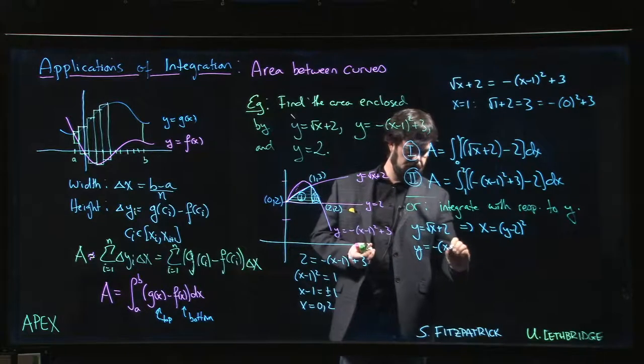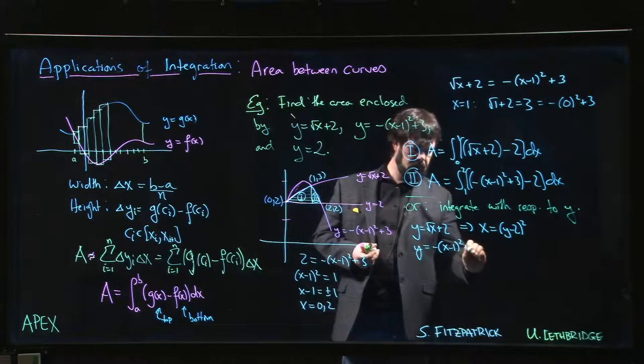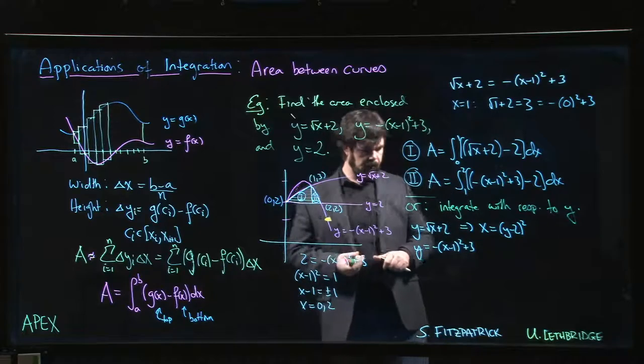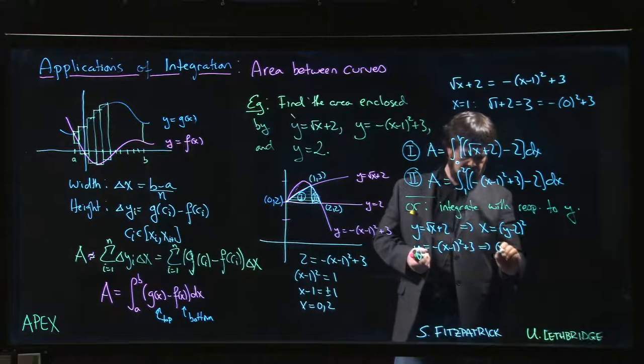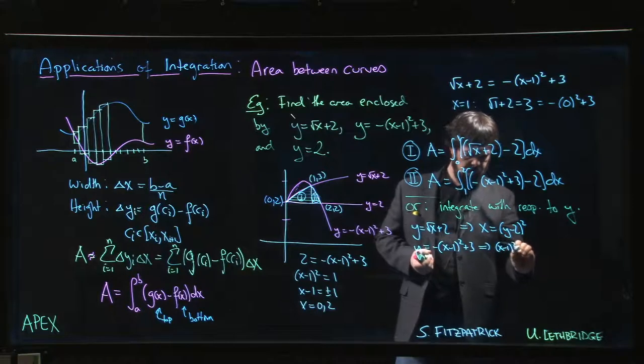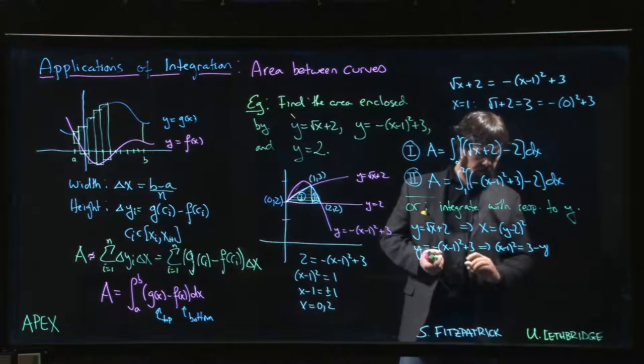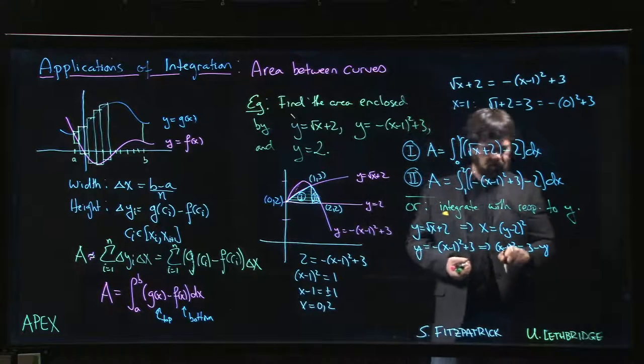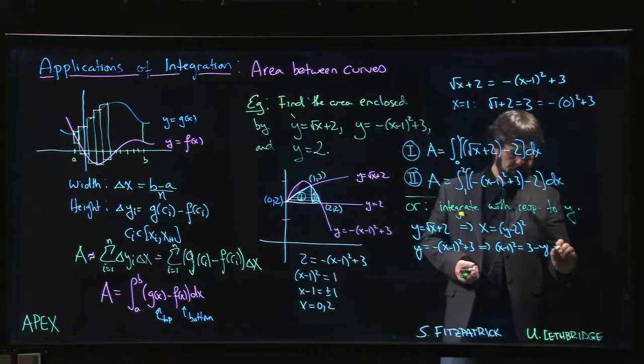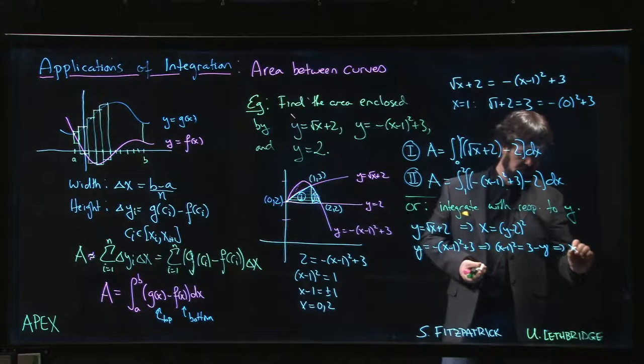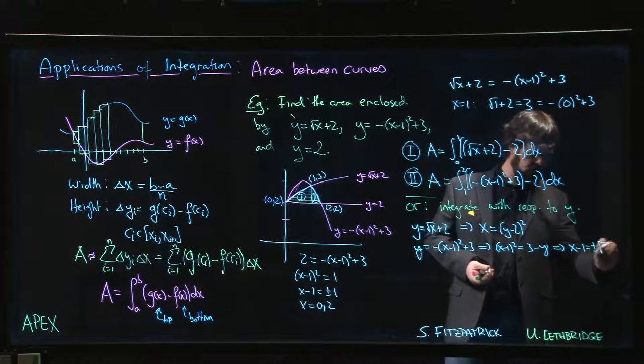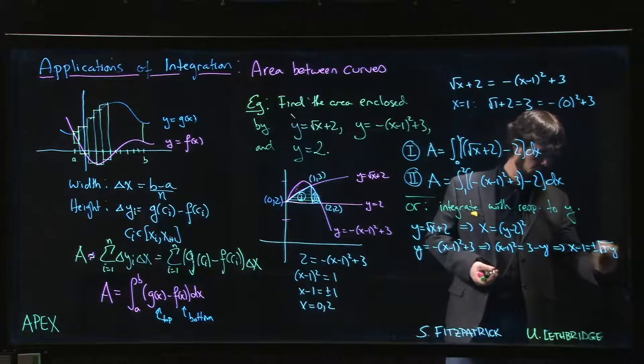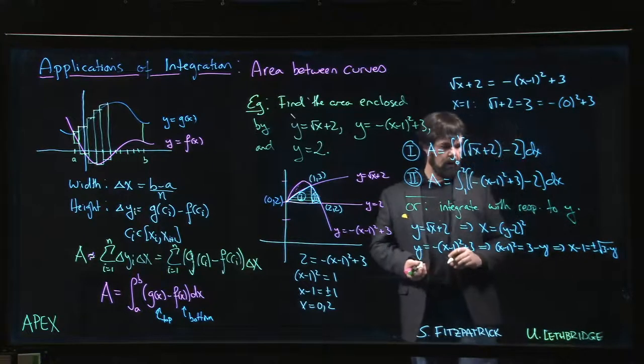If we have y = -(x-1)² + 3, that means that (x-1)² = 3 - y. And so we take the square root of both sides, x - 1 is going to be plus or minus the square root of 3 - y.